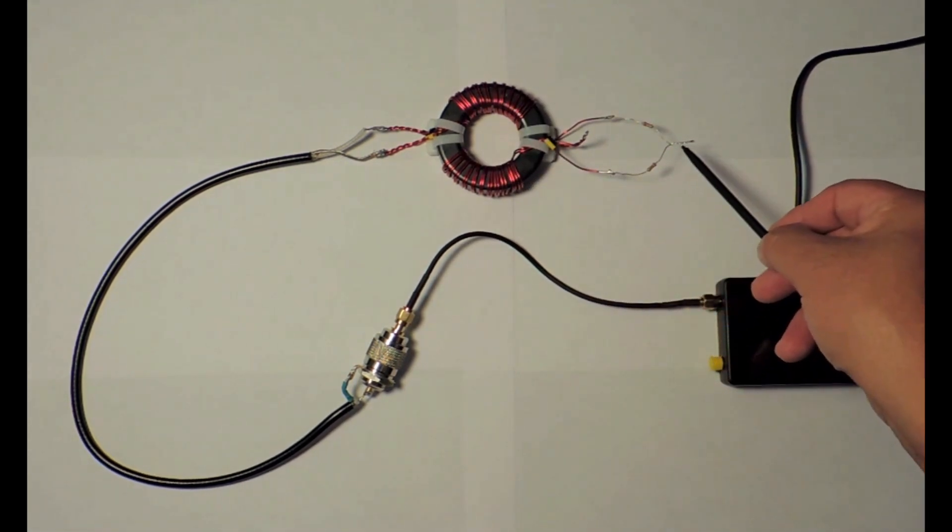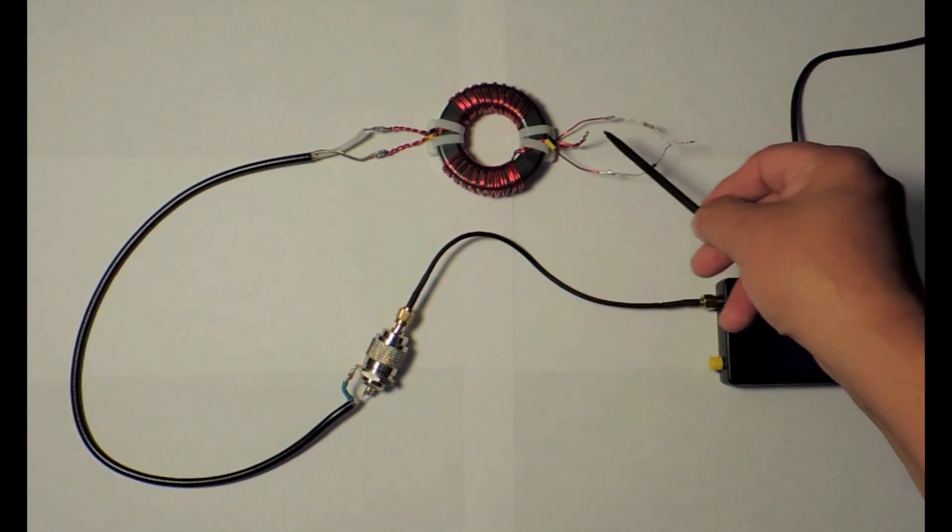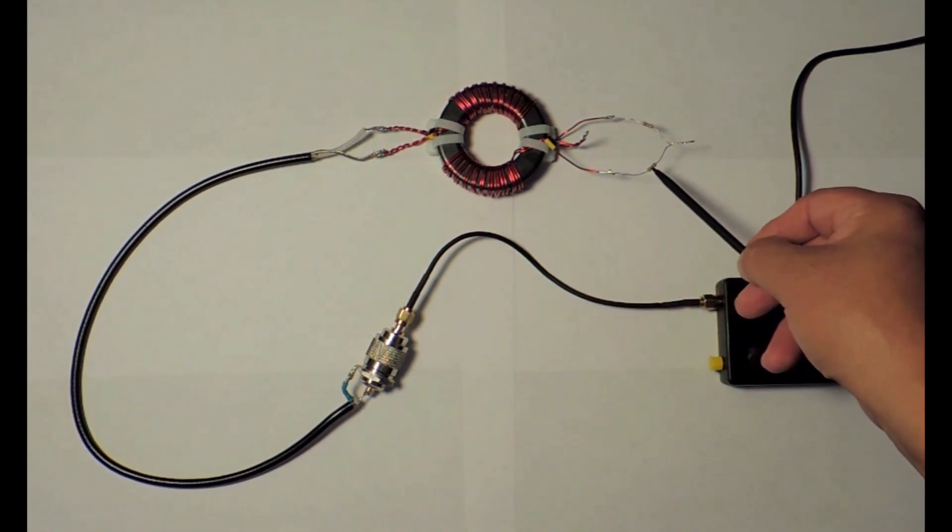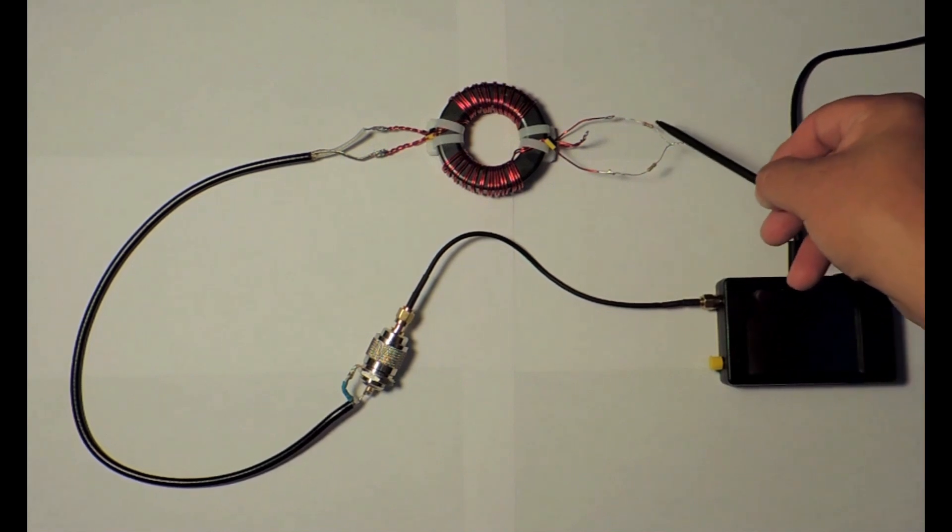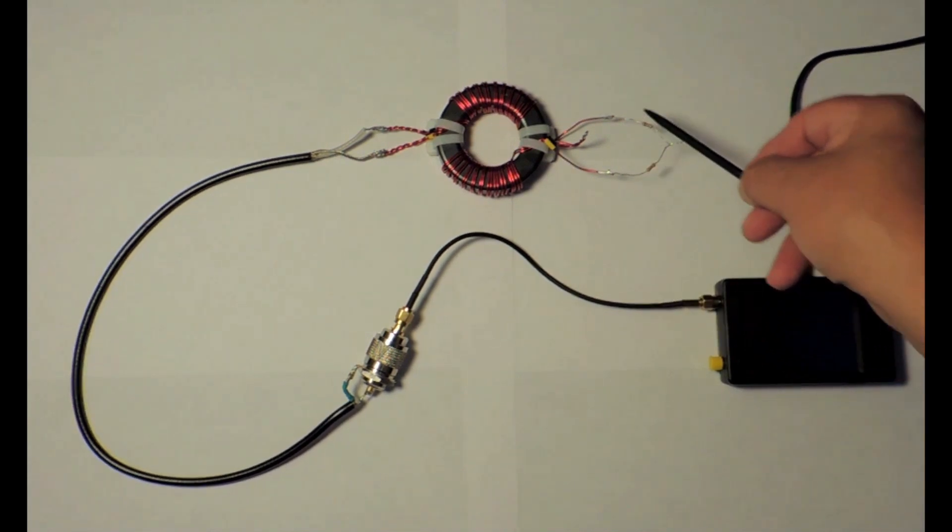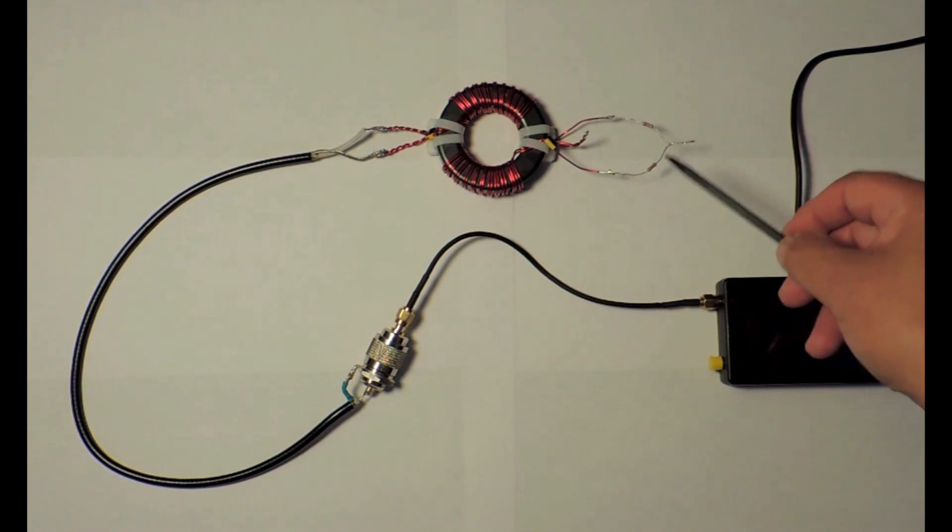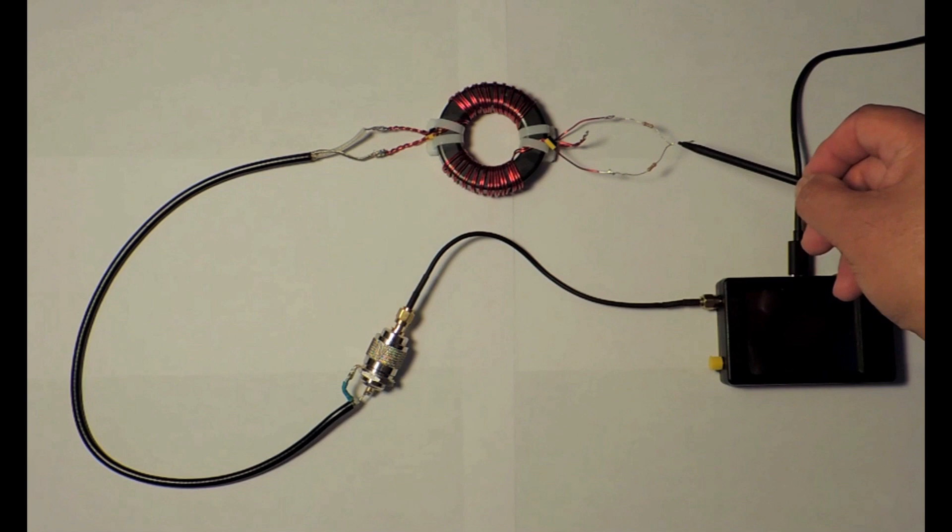Finally, the output of the 4 to 1 unun transformer is connected to a 200 ohm resistor that simulates the expected antenna impedance. 200 ohms divided by 4 equals 50 ohms. This 50 ohms is what our radio transceiver expects to see to transmit efficiently.